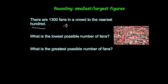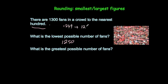This time we can go down to 1,200 — it could be 1,290, 1,280, 1,270 and so on — all the way down to 1,250. 1,250 would be the lowest possible number of fans. Because if you had 1,249 that would round down to the nearest 100 to be 1,200. So the lowest possible number would be 1,250.